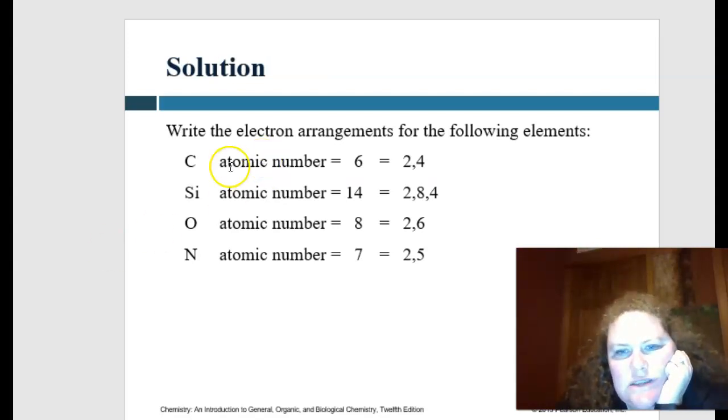So for calcium, our atomic number is six, so we'd have two, comma, four. For this one, we have atomic number 14, so we'd have two, comma, eight, comma, four. Oxygen is eight, so we'd have two, comma, six.